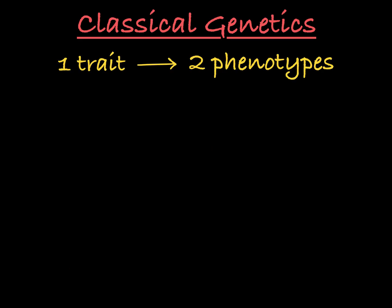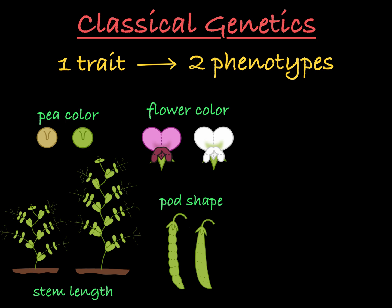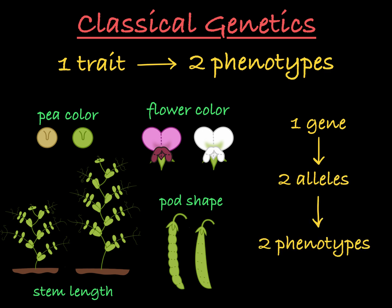In classical genetics, we are used to seeing traits with only two alternative phenotypes. In Gregor Mendel's study of pea plants, he looked at traits like pea color (green or yellow), flower color (purple or white), pod shape (round or pinching), and stem length (short or long). Each of these traits is associated with a single gene, and each phenotype is associated with one of two alleles of that gene.